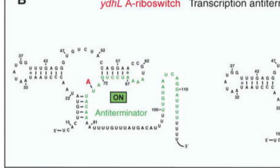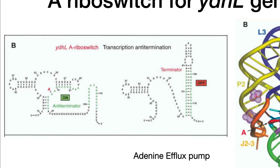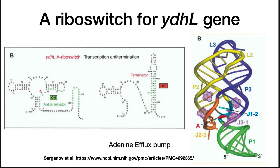I will repeat this several times throughout these lectures because it is a common misconception that students have: every stem-loop structure in a messenger RNA is not a Rho-independent terminator. You have to have a specific structure to have that terminator, and the secondary structure in the on position is not a terminator.